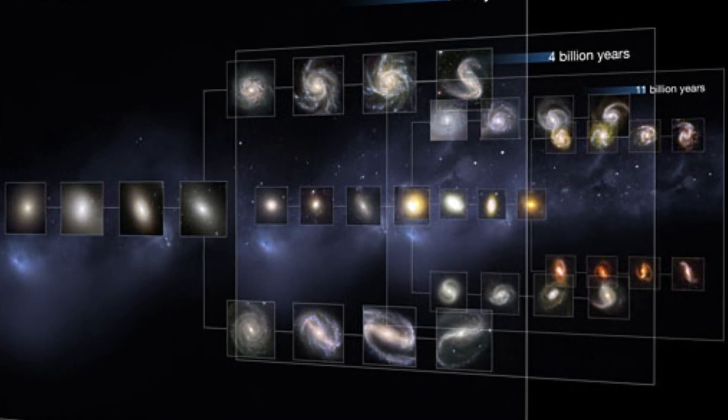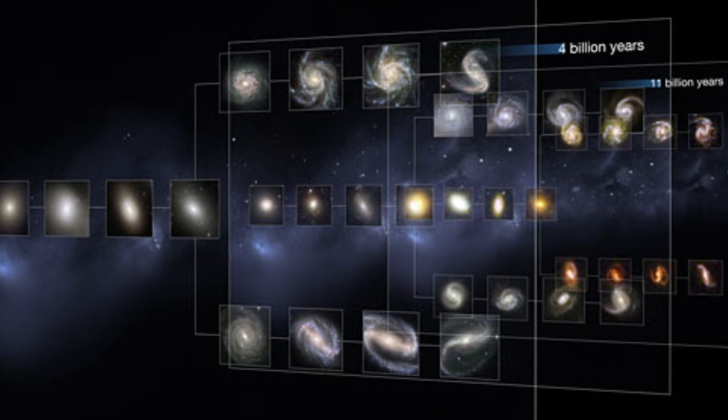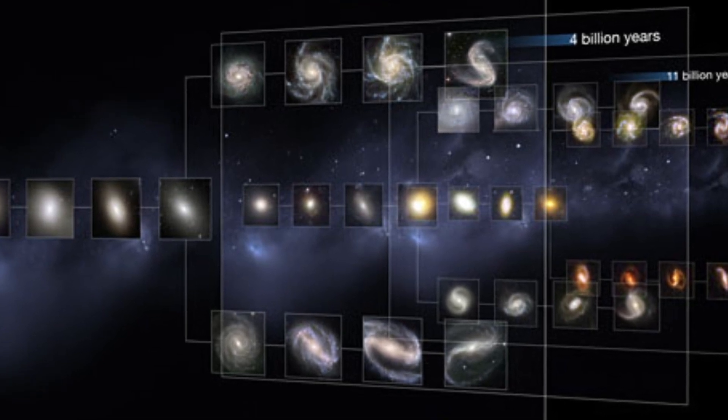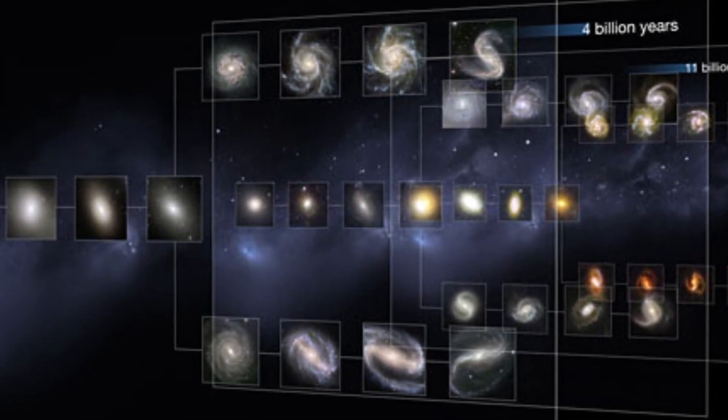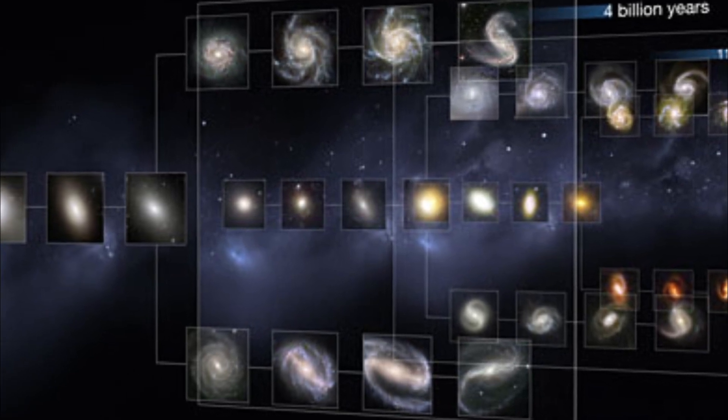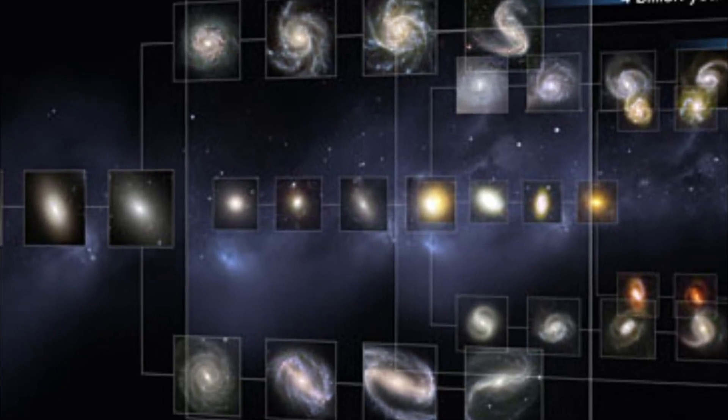Before the JWST began its observations, simulations and observations with less powerful telescopes showed that galaxies grow and evolve through hierarchical mergers in the universe's early times.